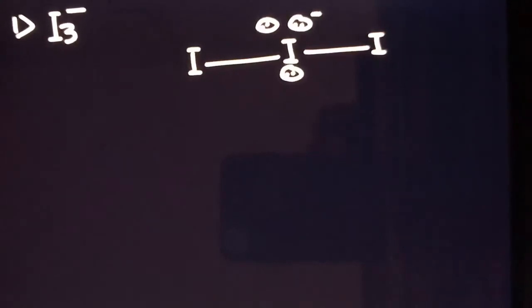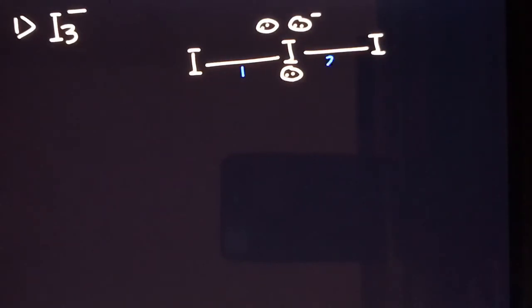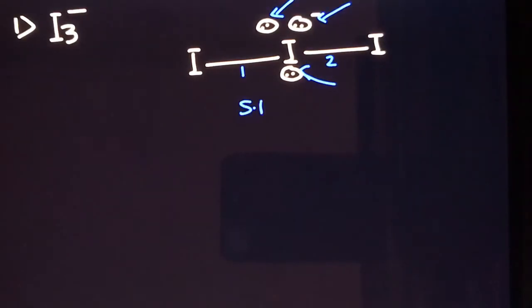For I₃⁻, we first draw the Lewis structure. This is a linear molecule, and on the central atom there are three lone pairs of electrons, and there is a negative charge on it. The central atom is forming two sigma bonds — this is one sigma bond and this is the second sigma bond. It has three lone pairs of electrons: one, two, and three. So the steric number equals the number of sigma bonds formed by the central atom, which is two, plus the number of lone pairs, which is three — giving five.